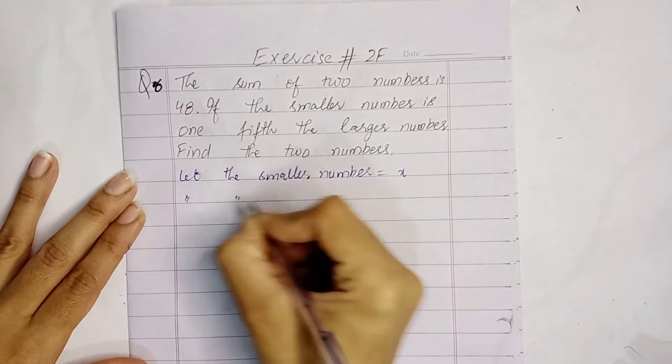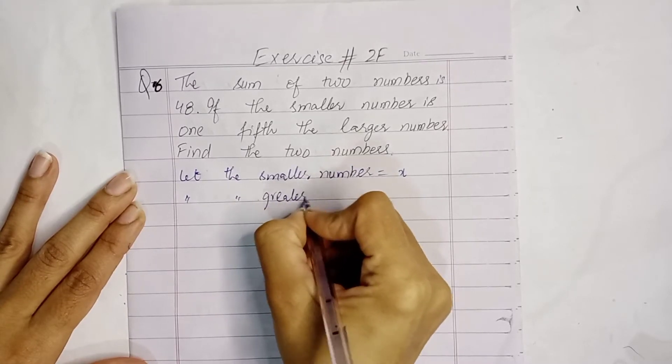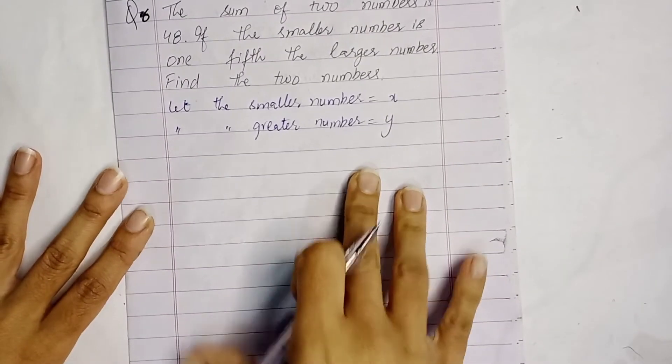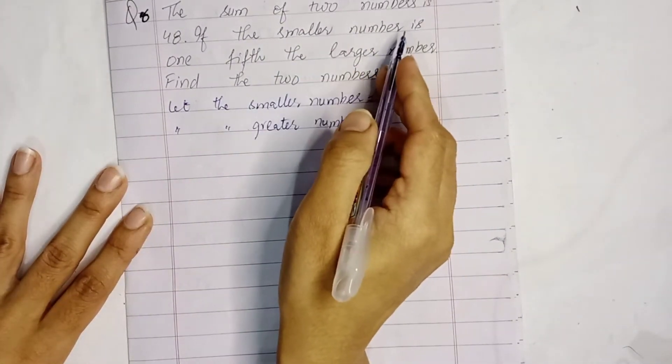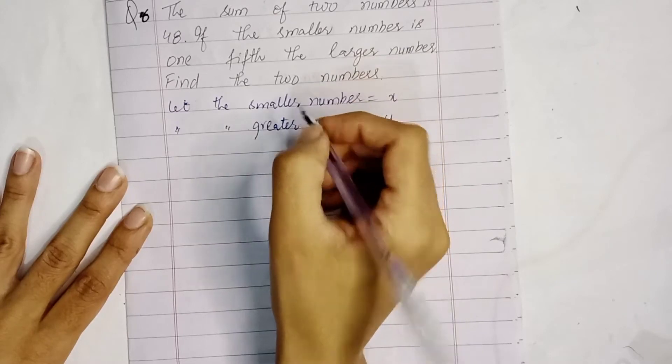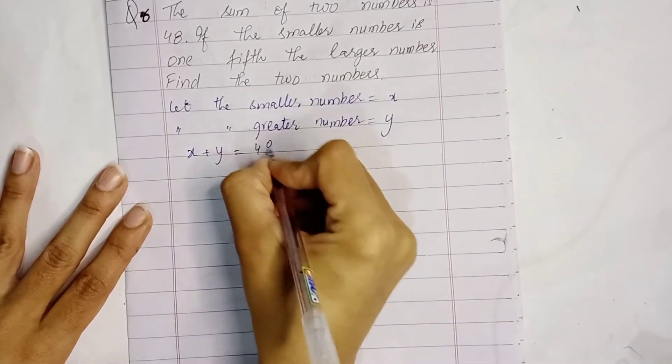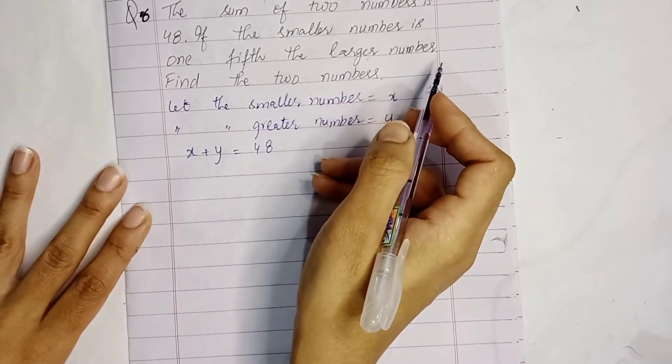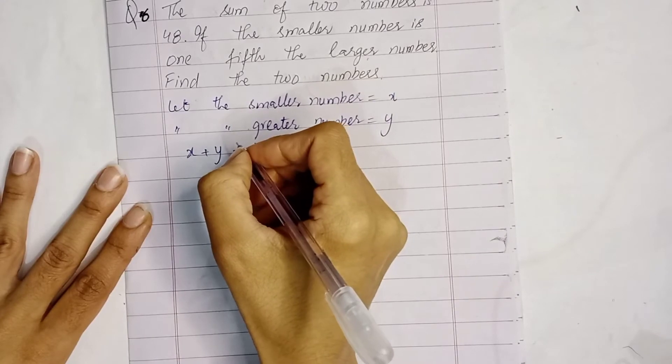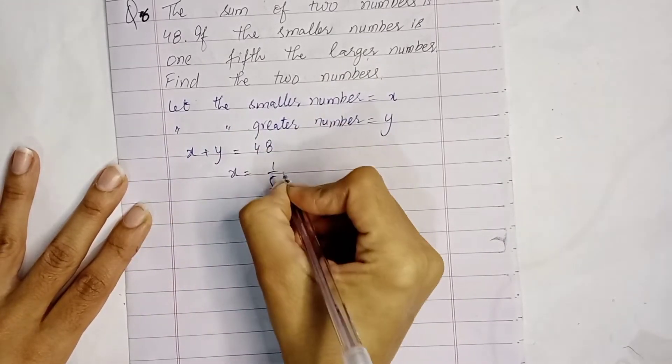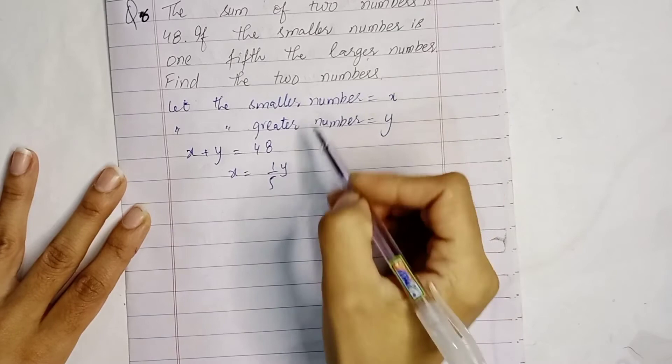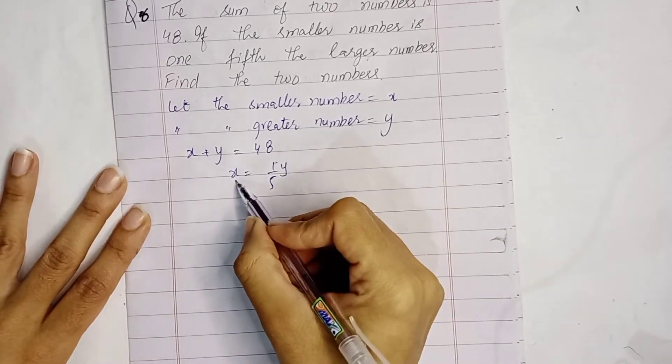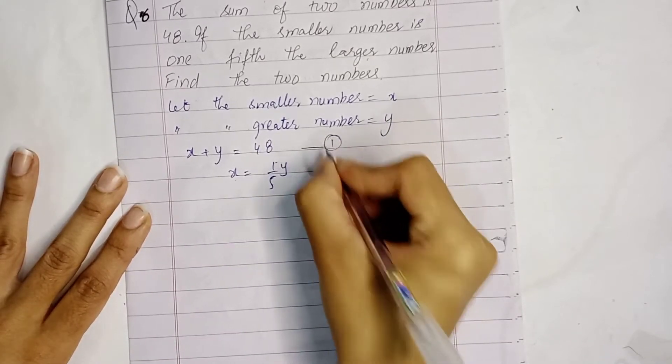Let the smaller number be x and greater number be y. The sum of two numbers is 48: x plus y equals 48. If the smaller number is 1/5th the larger number: x equals y by 5. We have two equations.